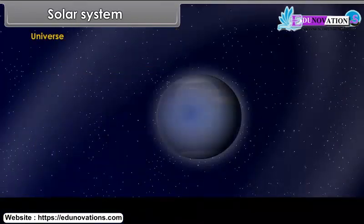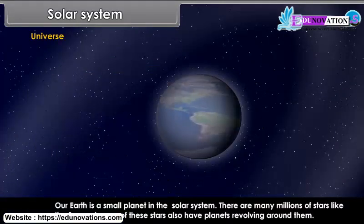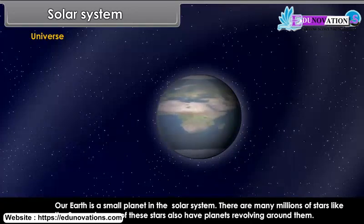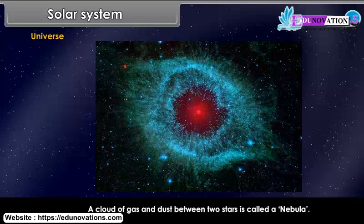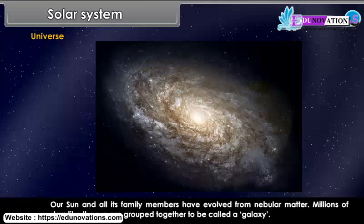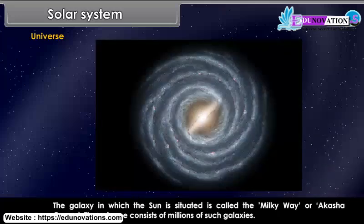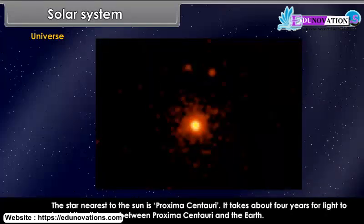Our Earth is a small planet in the solar system. There are many millions of stars like the Sun, and some of these stars also have planets revolving around them. A cloud of gas and dust between two stars is called a nebula. Our Sun and all its family members have evolved from nebular matter. Millions of stars like the Sun are grouped together to form a galaxy. The galaxy in which the Sun is situated is called the Milky Way or Akash Ganga. The universe consists of millions of such galaxies. The star nearest to the Sun is Proxima Centauri, and it takes about four years for light to travel the distance between Proxima Centauri and the Earth.